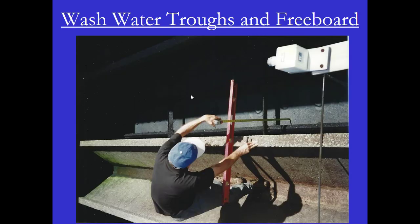The first step to doing a filter inspection is to drain the filter after a filter run, get into the wash water troughs, and determine if the troughs are level. You want to put the level across the trough, and also put the level between each trough to see that everything is level within the filter.